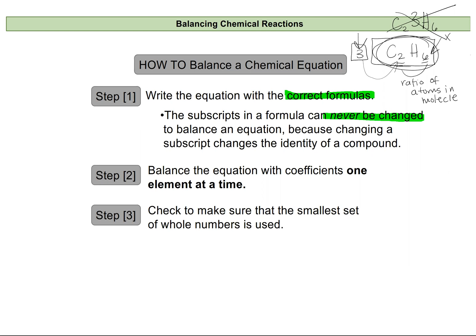We're going to balance equations one element at a time. I highly recommend focusing on one element rather than trying to look at everything at once — it's easy to get lost treating it as one large problem instead of breaking it into smaller ones. At the end, make sure you have the smallest set of whole numbers. If coefficients are two, two, and two, divide everything by two to get the smallest ratio of one to one to one.